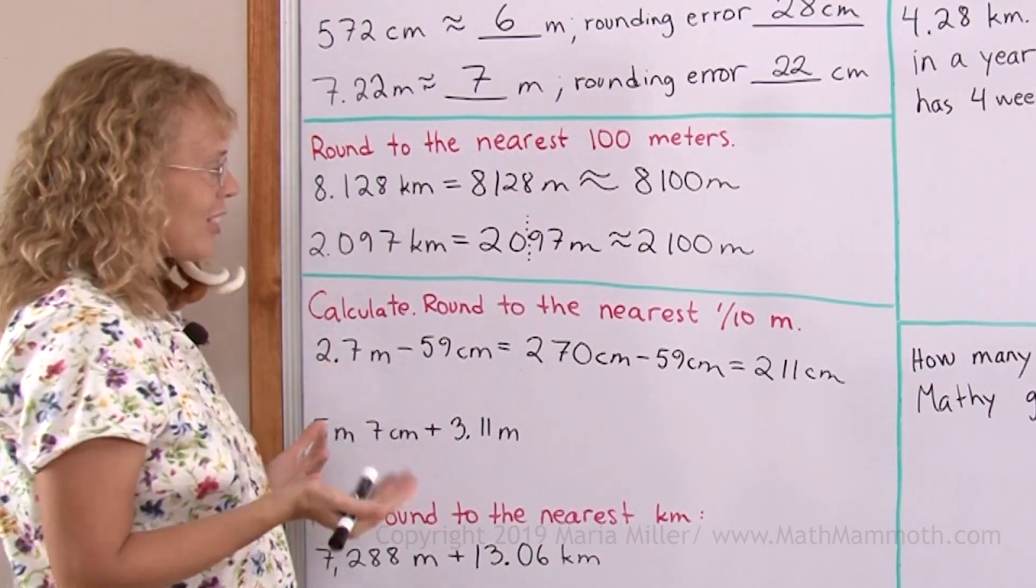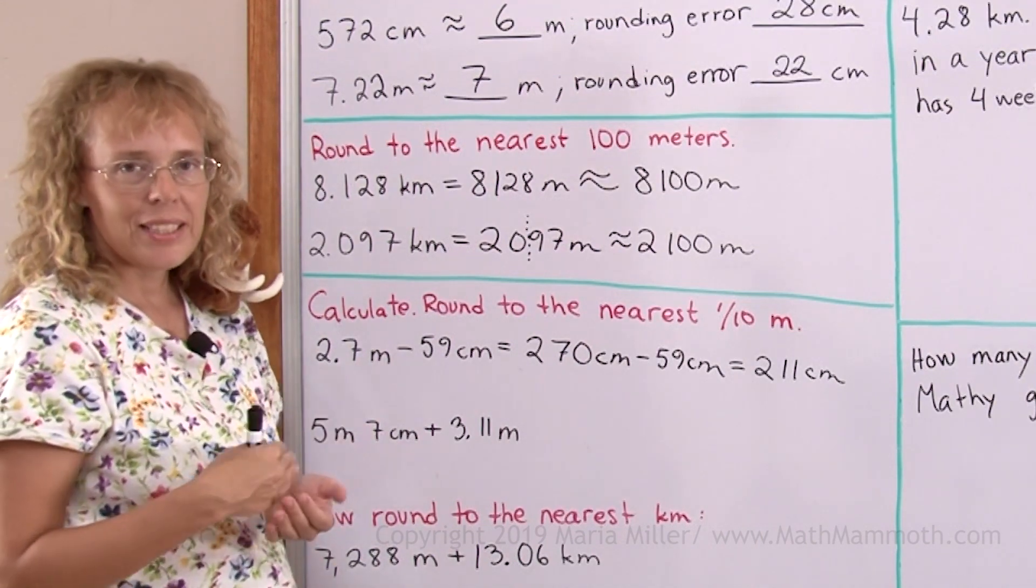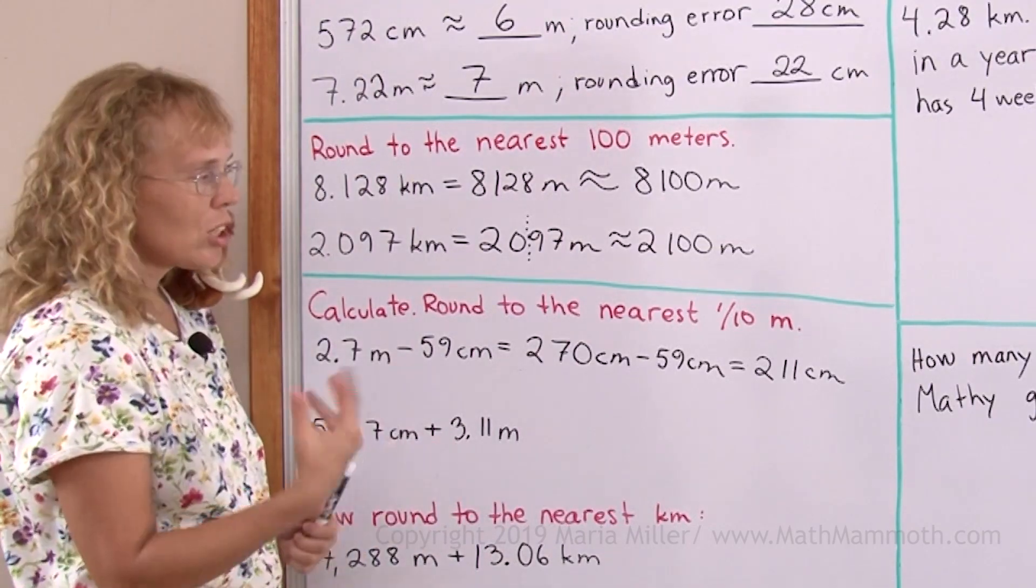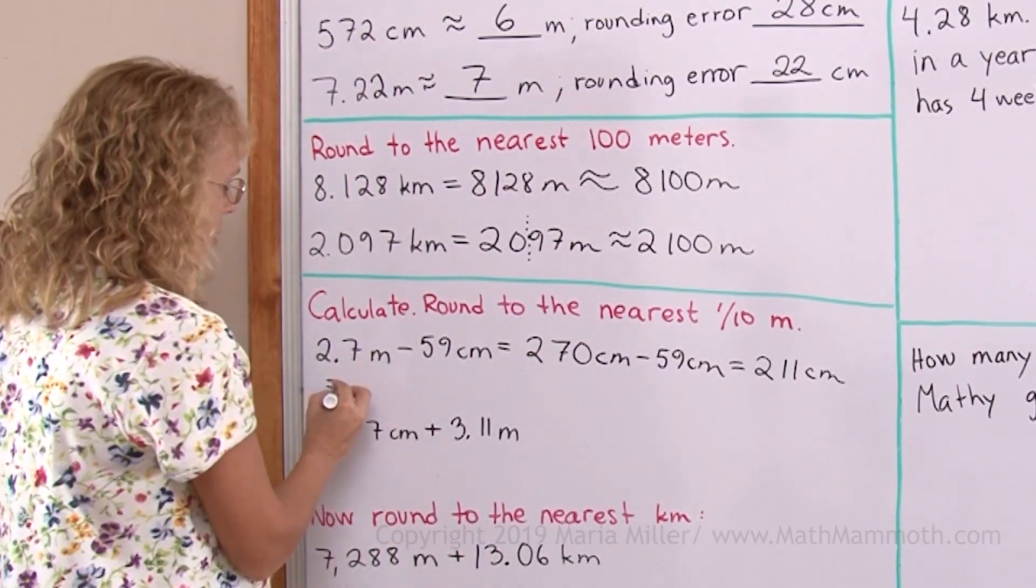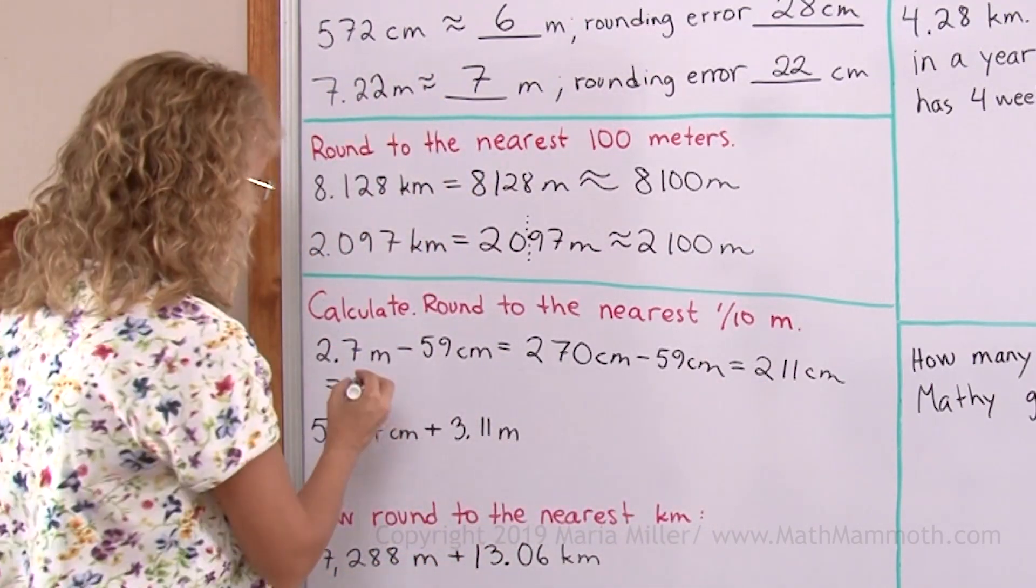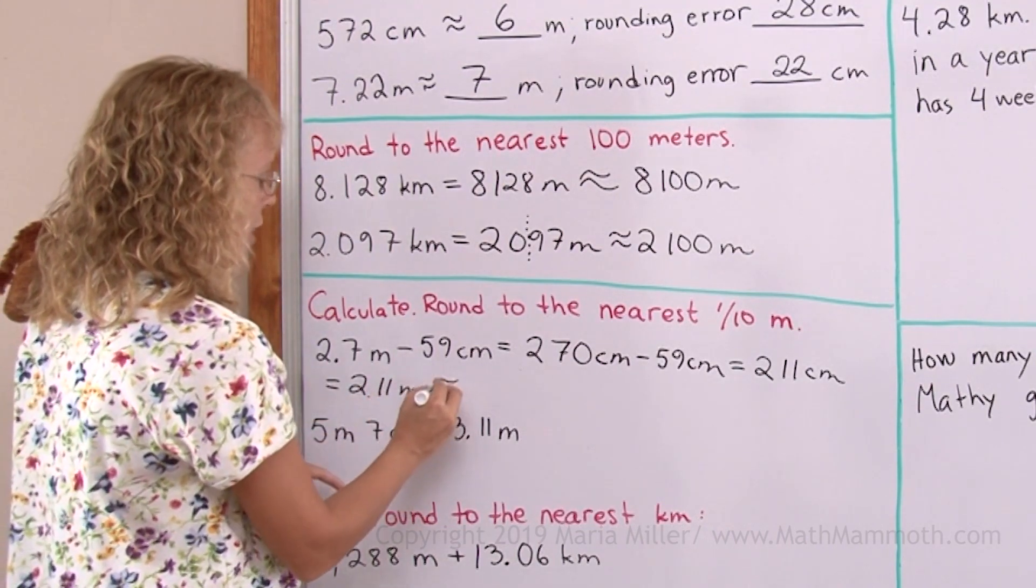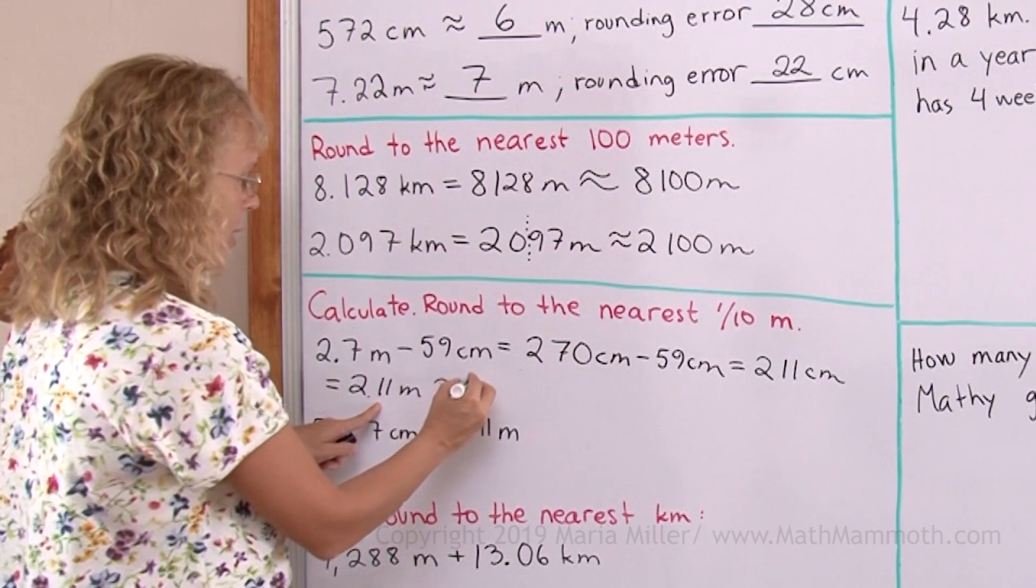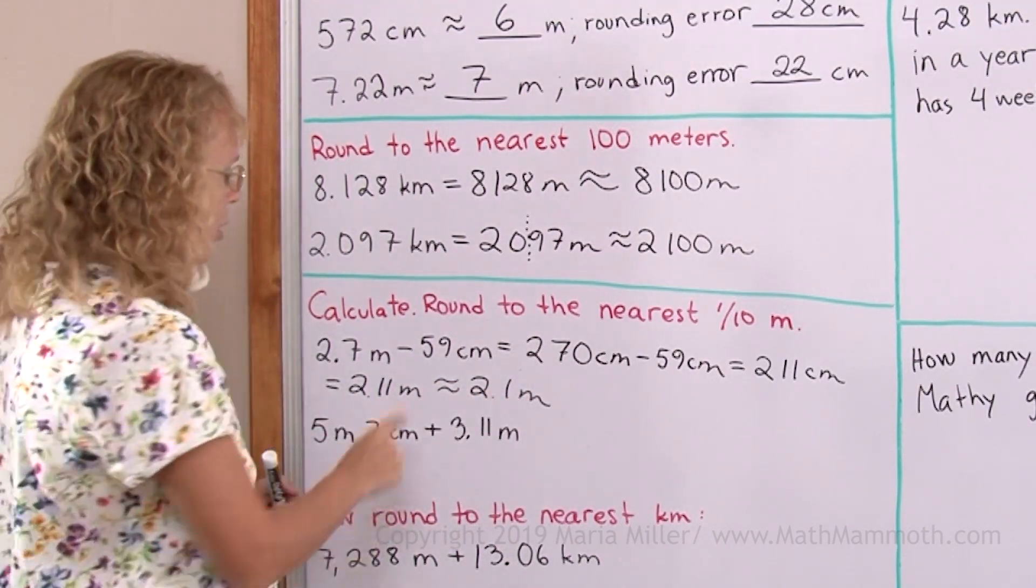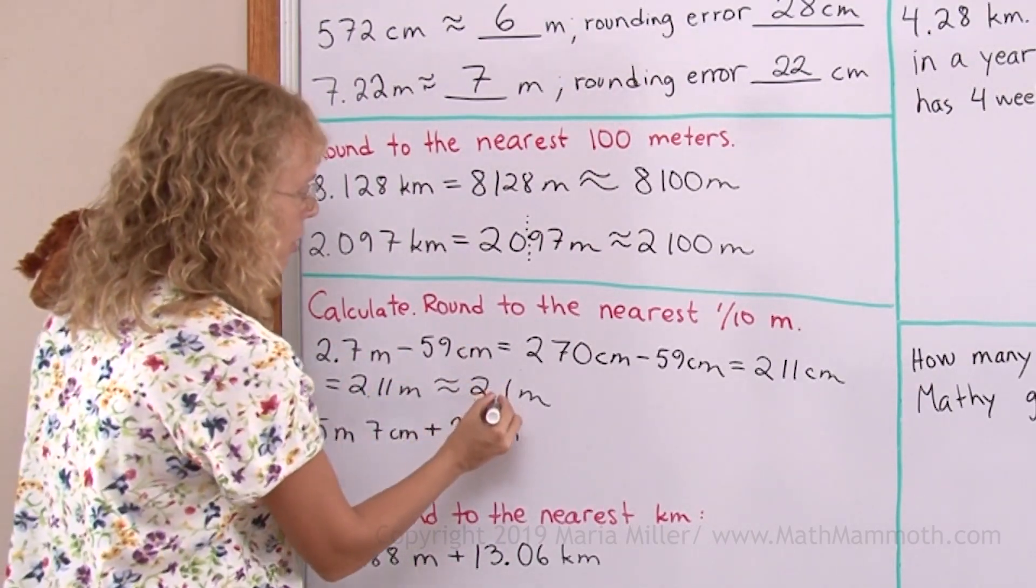Now the rounding, because it is asking us to round to the nearest tenth of a meter. Now tenth of a meter would be decimeter. These are centimeters though. Maybe the easiest thing is to change this back to meters. Knowing that 200 centimeters is exactly 2 meters, so we have to have 2 in the ones place. 2.11 meters. And then we round to the tenths place here. So it is about 2.1 meters. And you can do it the other way around too, so that you change this to 0.59 meters, subtract, and then you already have it in meters and you round.